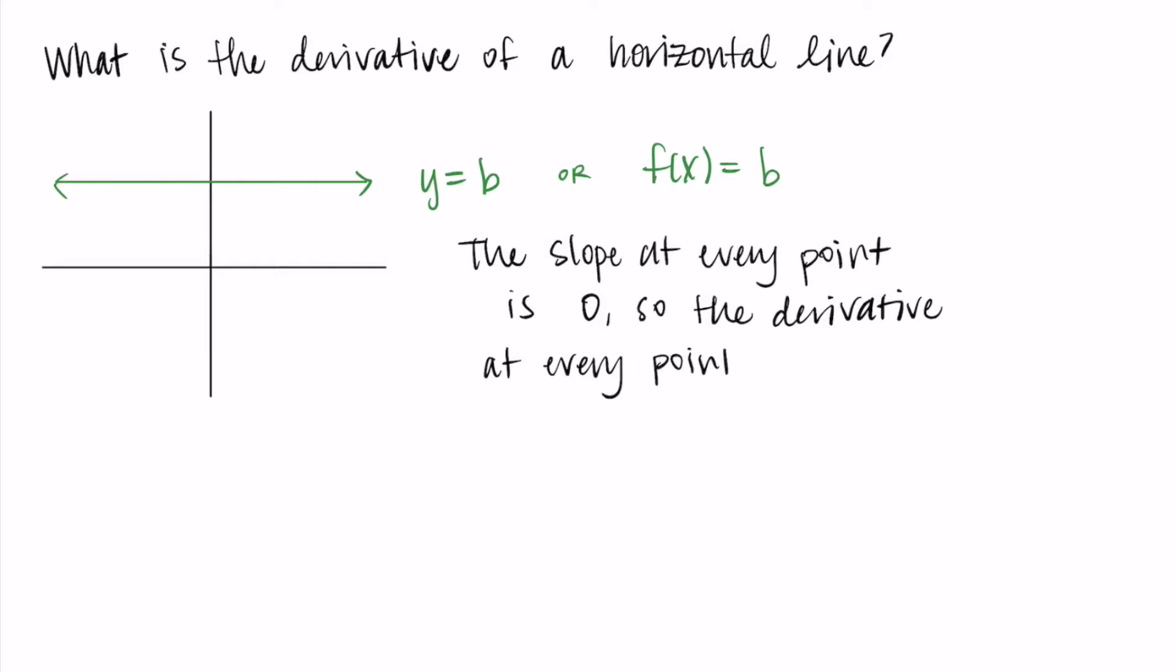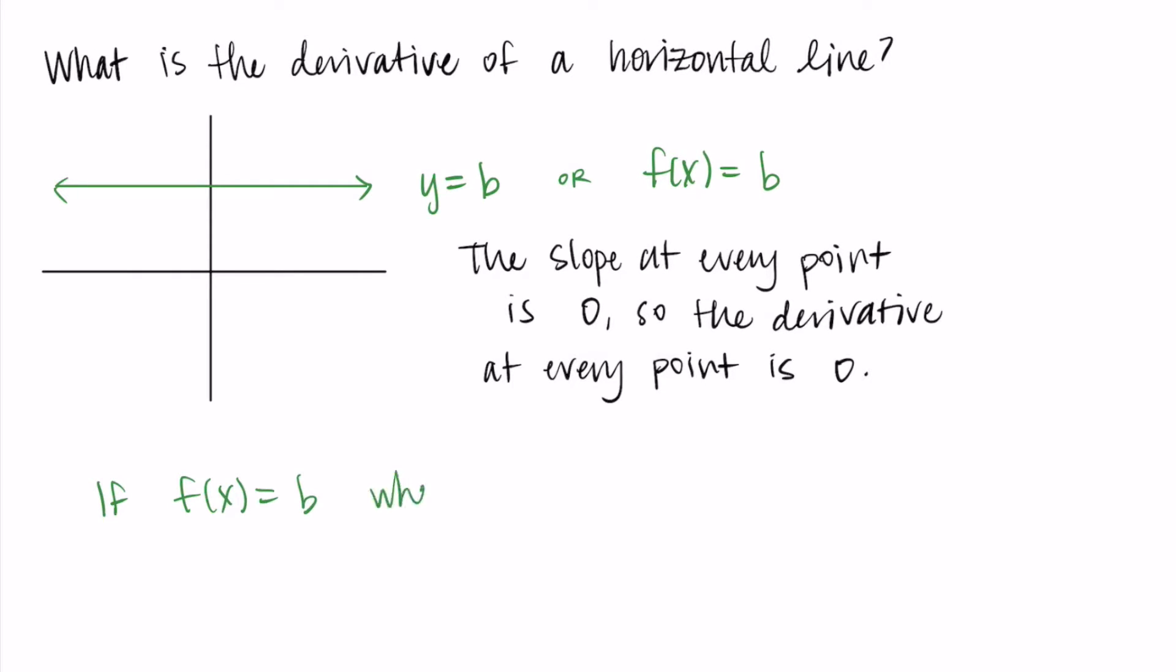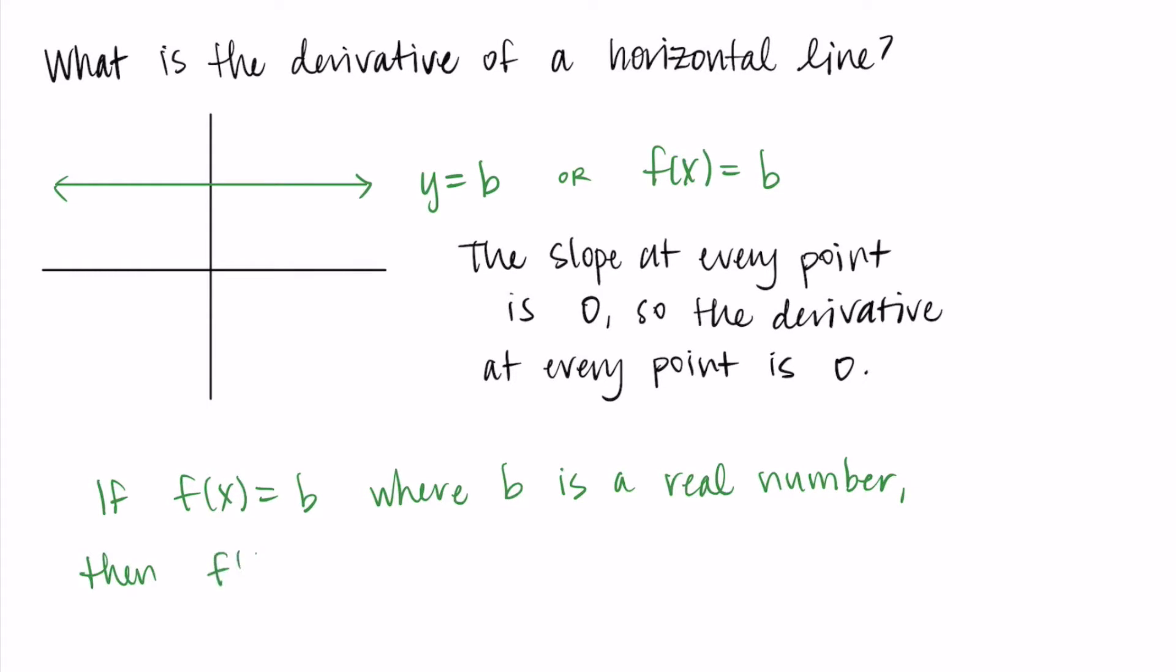We can write this out in a more formal mathematical statement. If f of x equals b, where b is a number, a real number, some constant, then f prime of x equals zero.